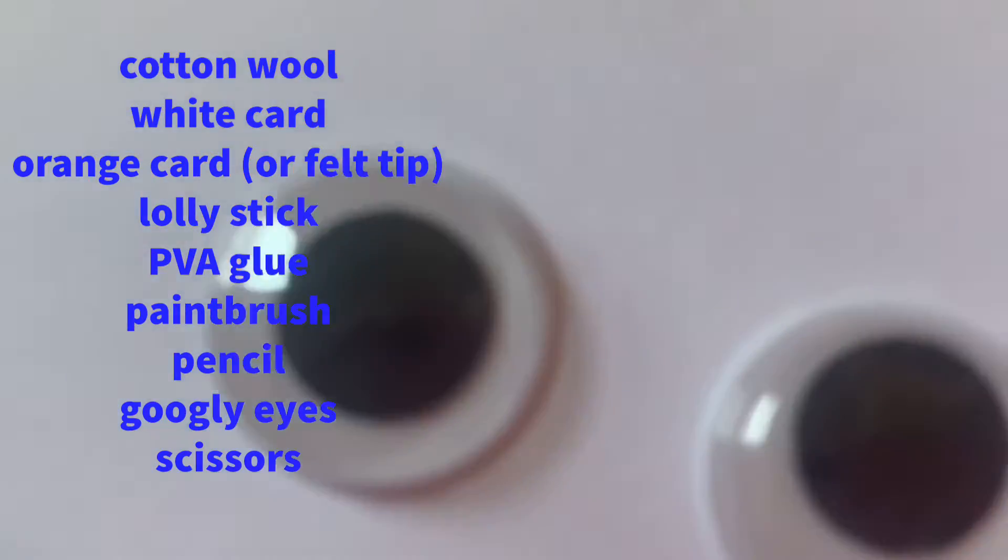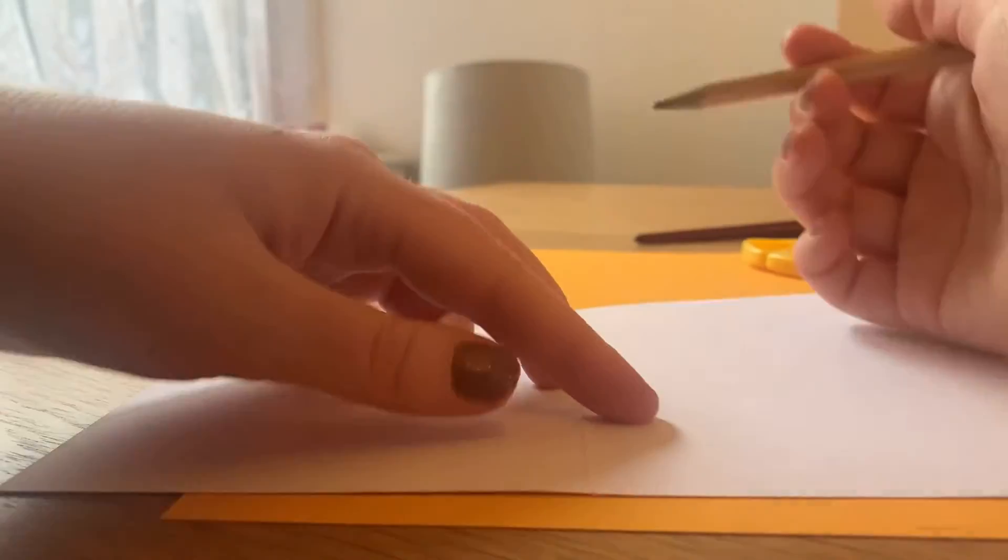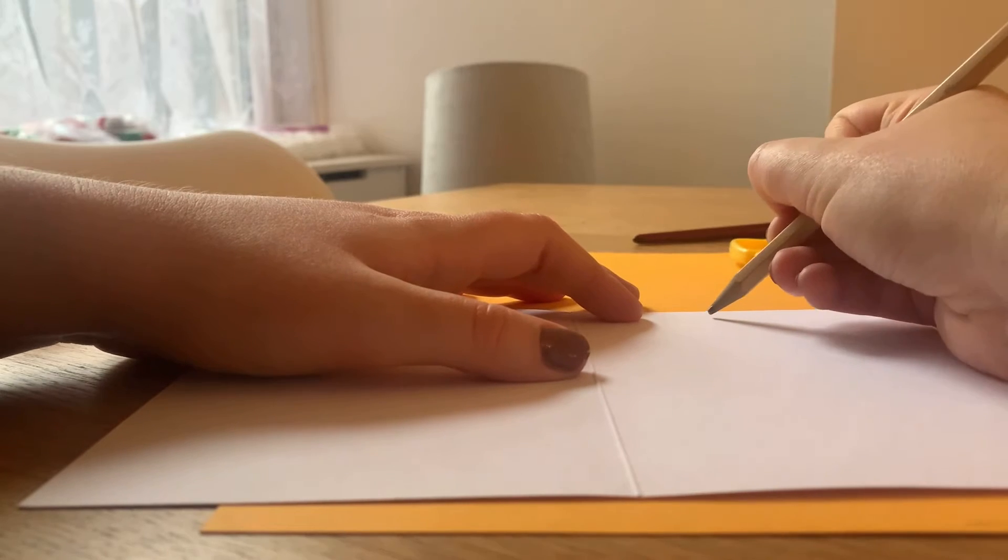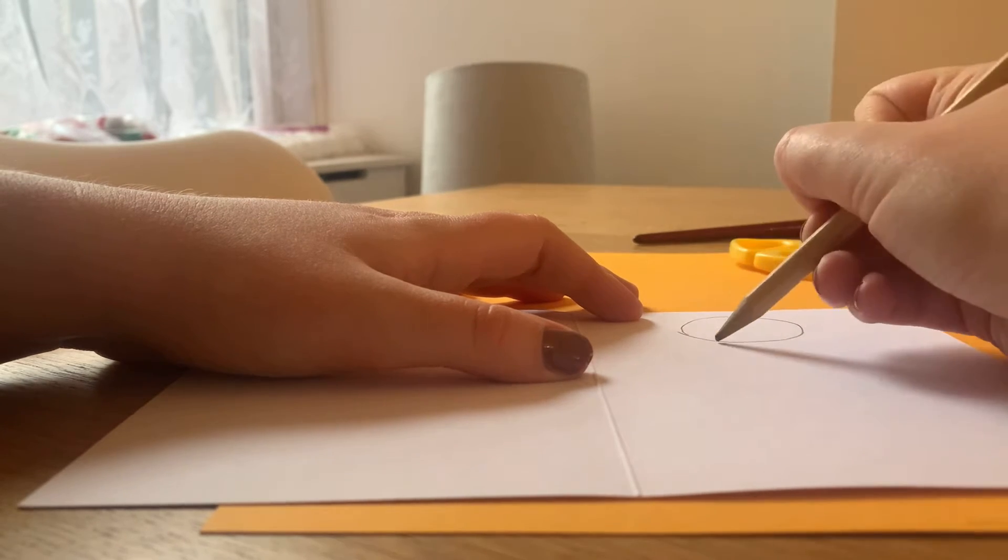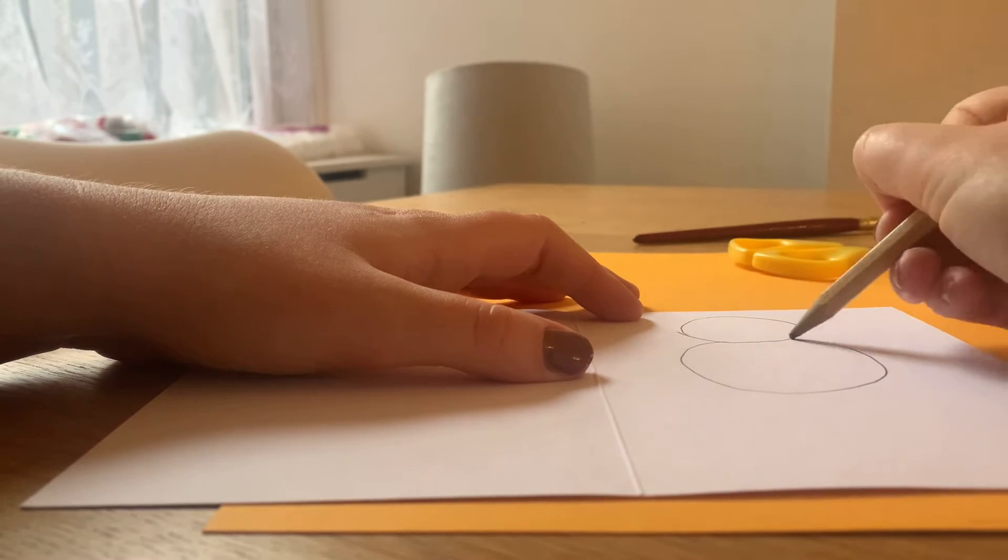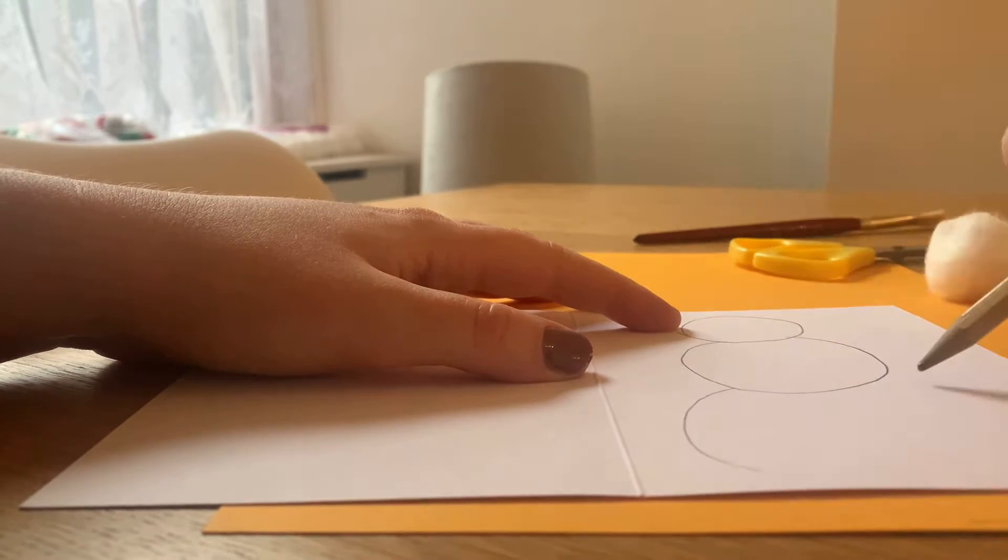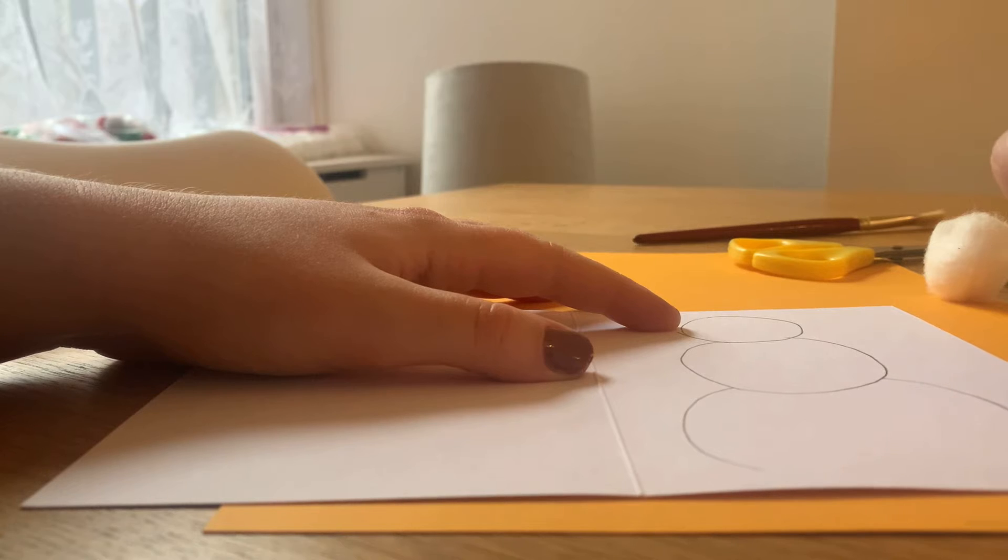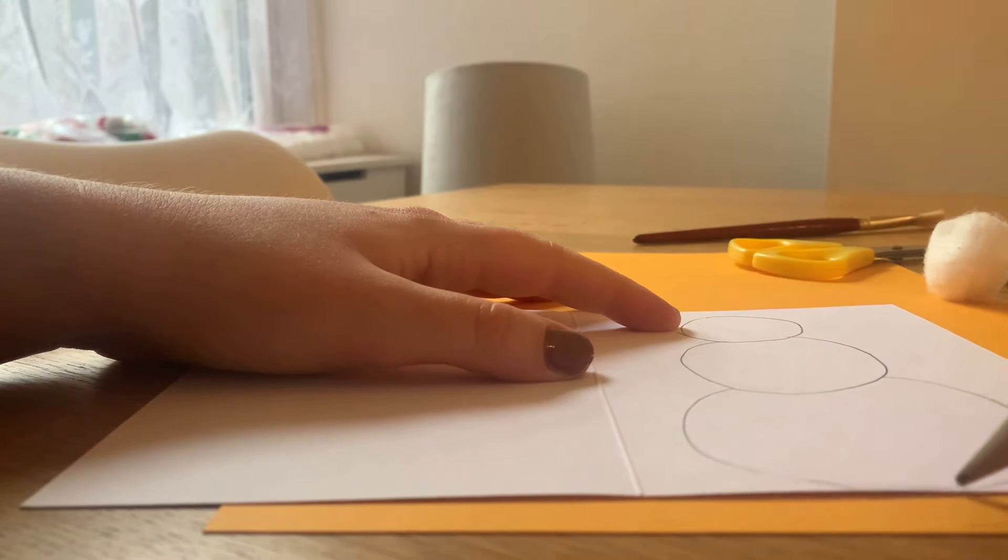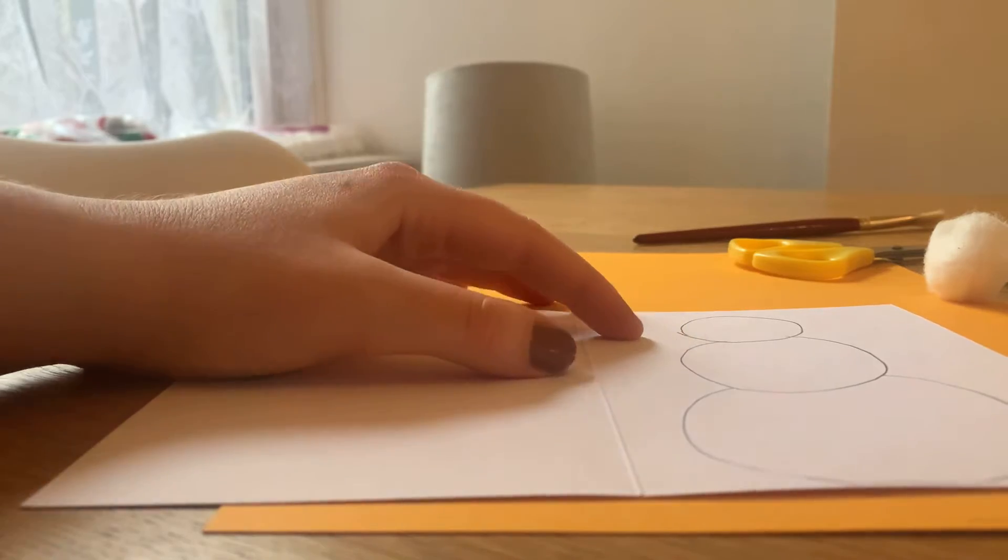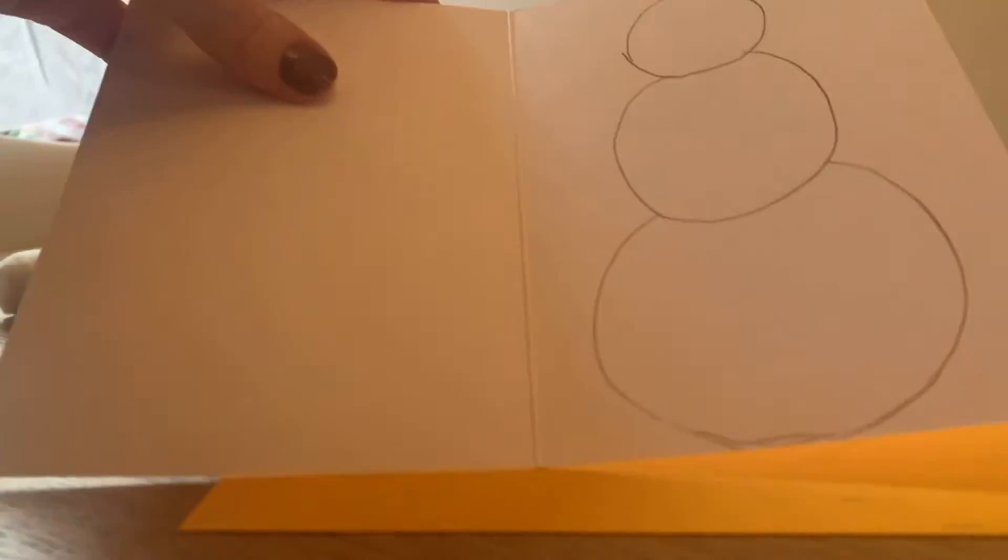Here we go! First things first, take your white card and on half of it I want you to draw three big circles. Make sure your circles get bigger and bigger as you draw them, starting with a small head, bigger body, and even bigger last bit of the body, the legs, where the legs should be.